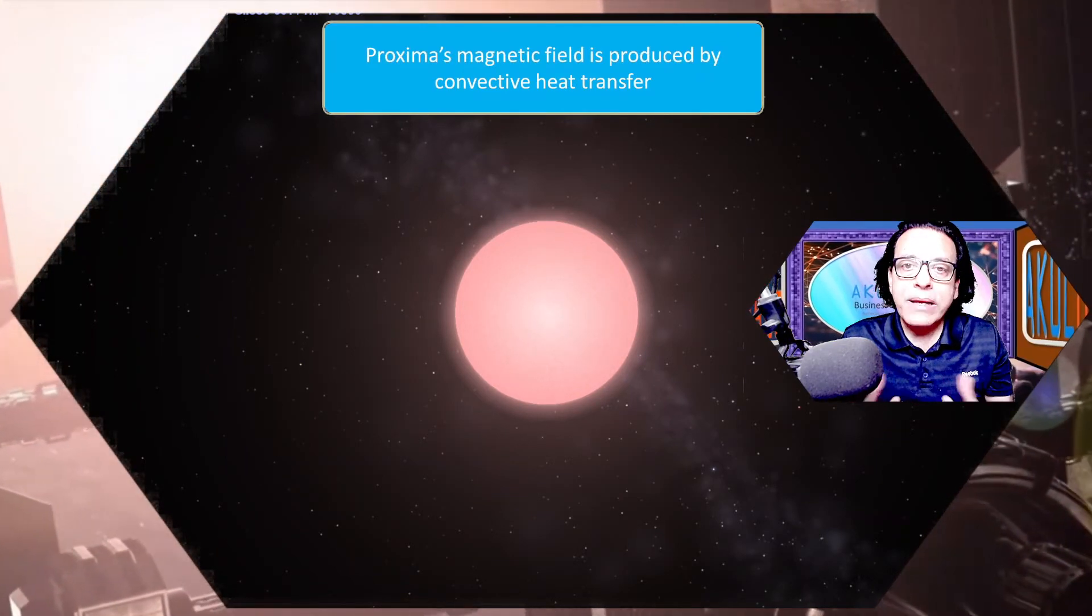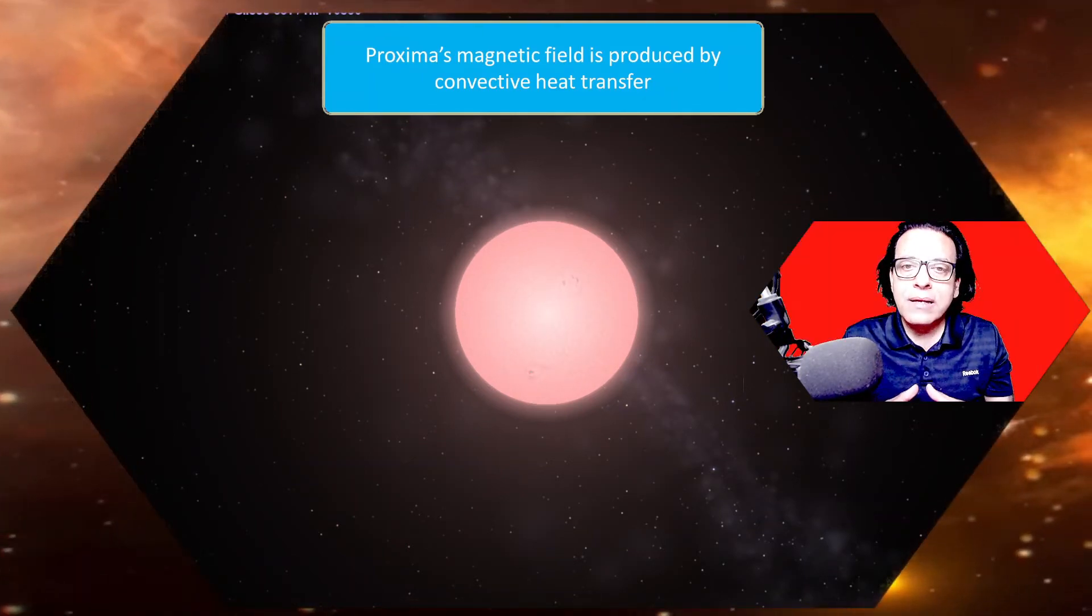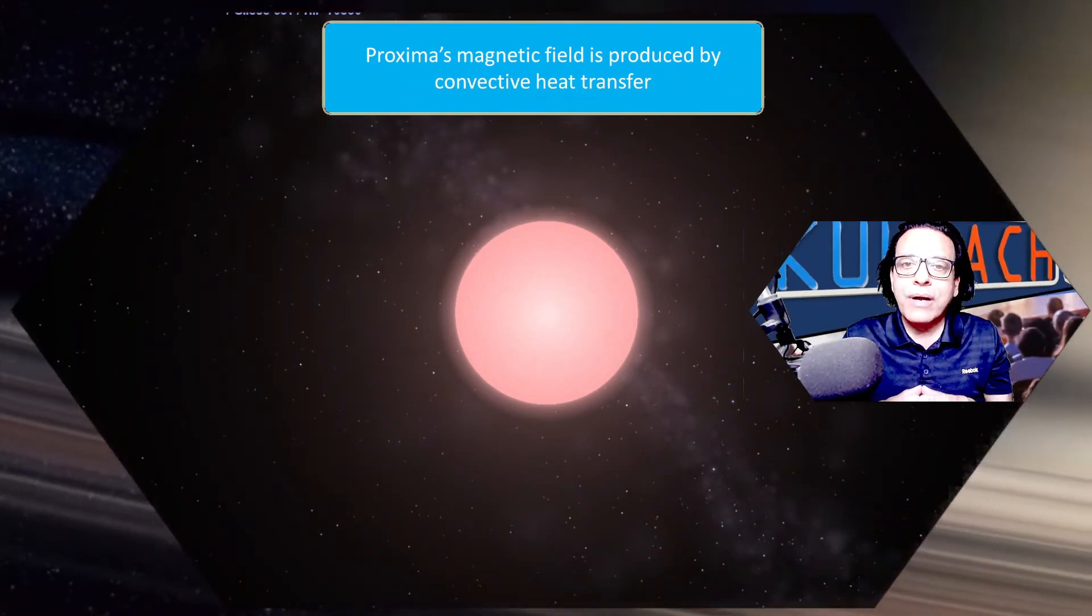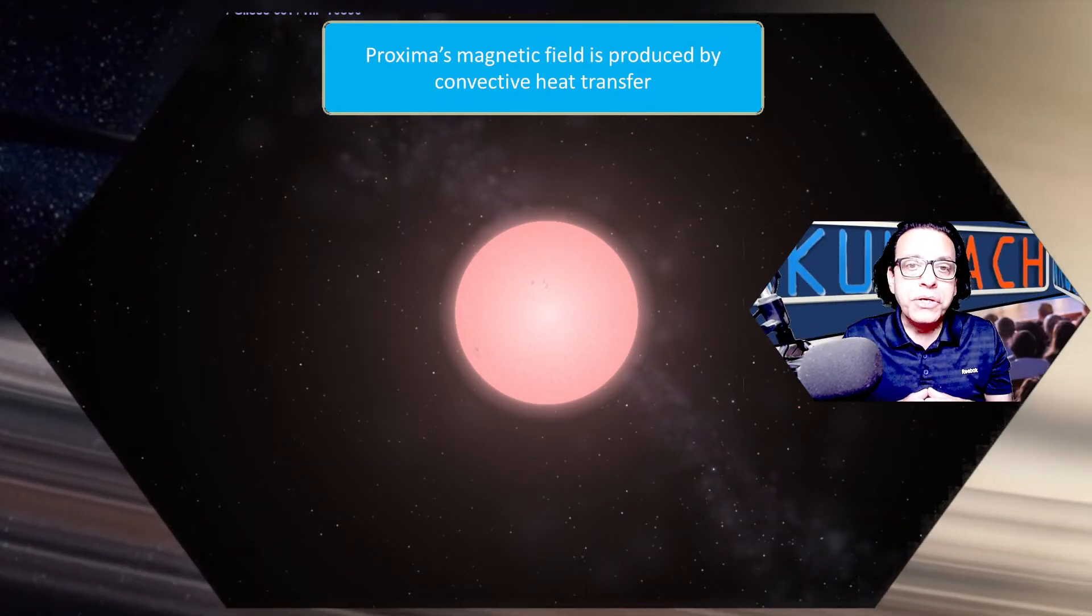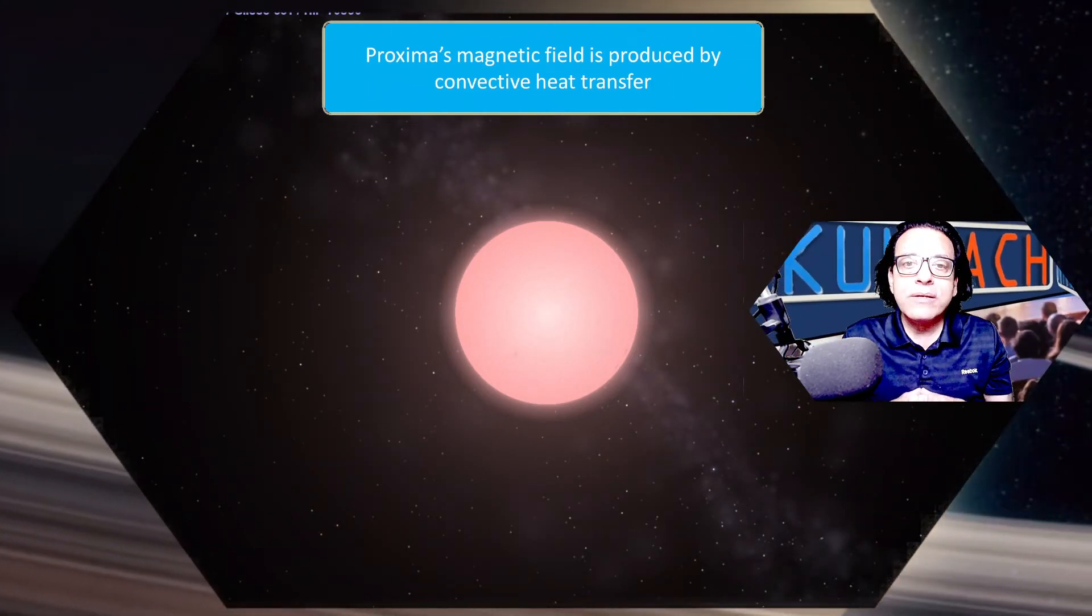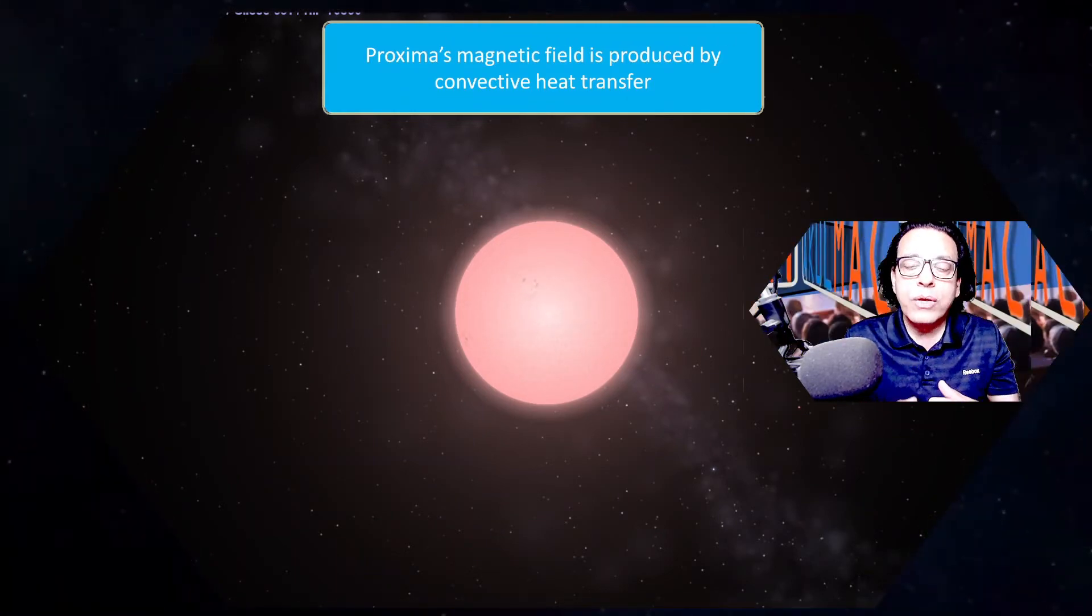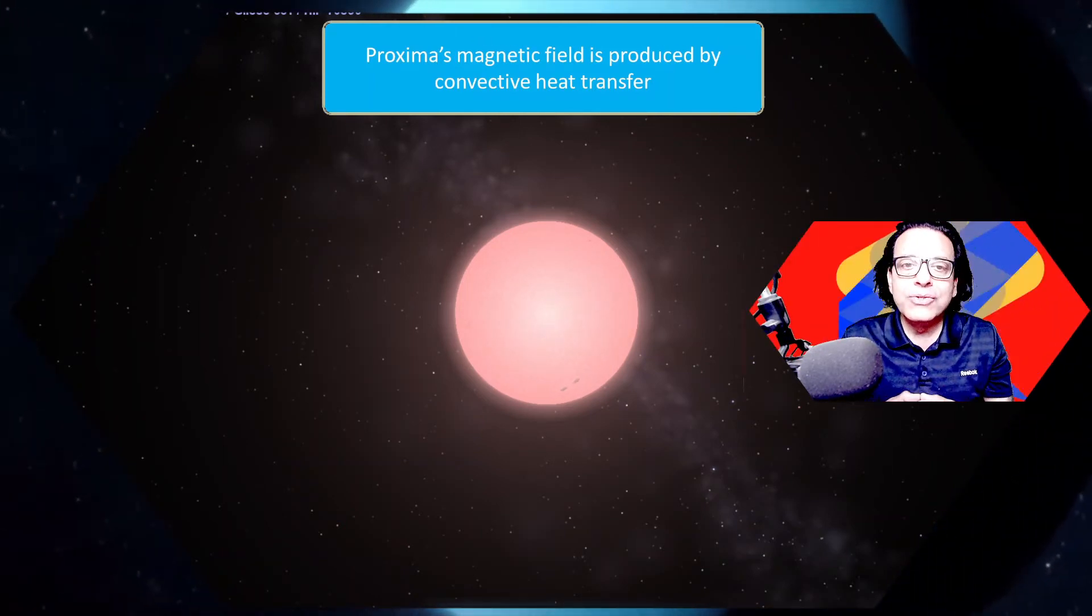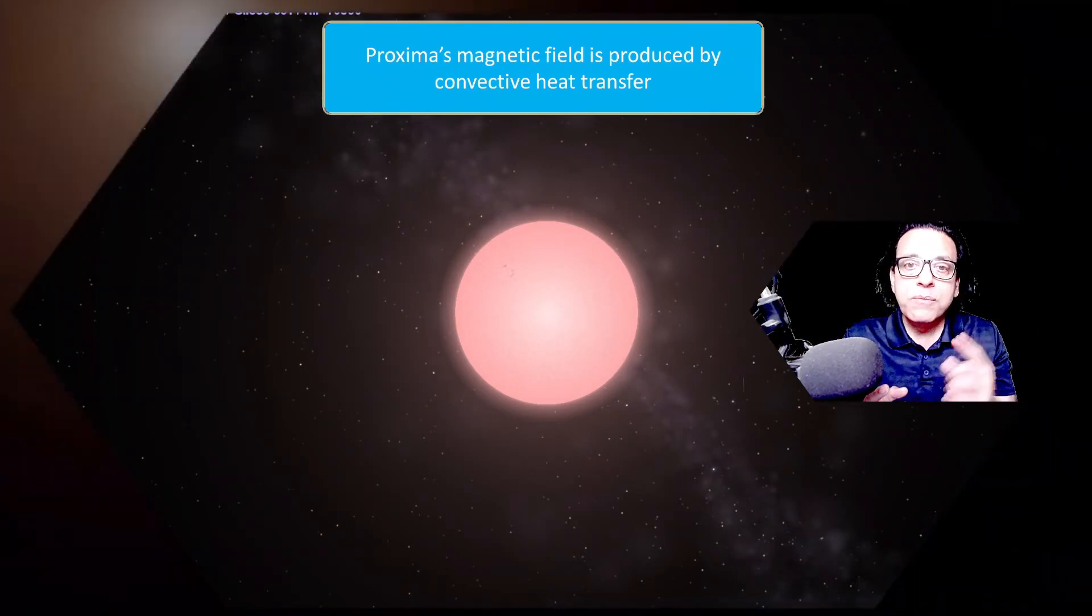The magnetic field is produced because of a lot of activity going on inside the star. As I mentioned already, the entire star is made of hydrogen and the thermonuclear reaction is happening in the entire star. The star itself is very active, and because of that, the hydrogen which exists in the form of plasma is free to move around, creating a very strong magnetic field.